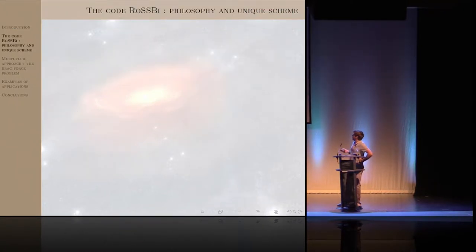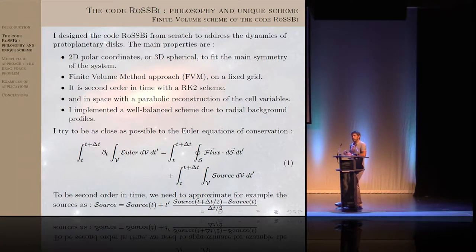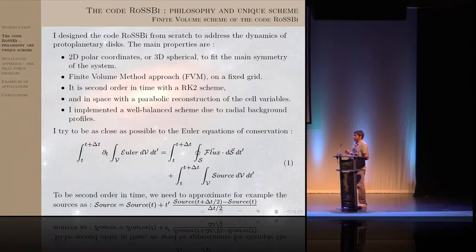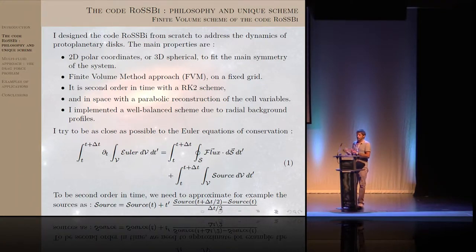For that, we do numerical simulations, and the code ROSB is one of the tools you could use for that. I designed this code from scratch with the goal of having the right tool for protoplanetary disk systems. For the moment, it's mainly used in 2D polar coordinates — we study the full disks, meaning the full 2π azimuthal extent. It also works in 3D spherical coordinates, to fit the symmetry of the system, where you have a central star and the gravitational potential is spherical.